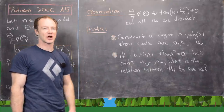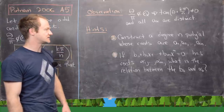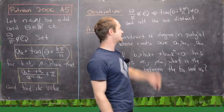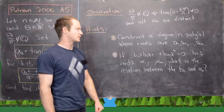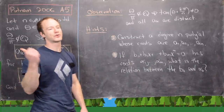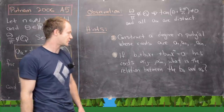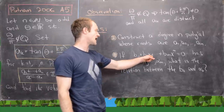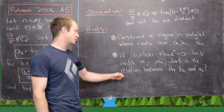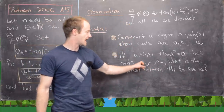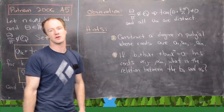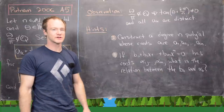Here are some hints if you want to try the problem yourself. The first goal is to construct a degree-N polynomial whose roots are A_1, A_2, up to A_N. The distinctness of the A_k implies these are all the roots, since degree-N polynomials have at most N roots. We also need a lemma — similar to one involving Chebyshev polynomials — about the relationship between the coefficients B_k and the roots α_k of a polynomial.